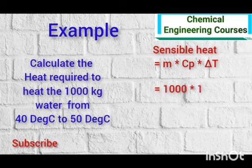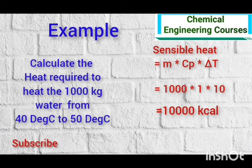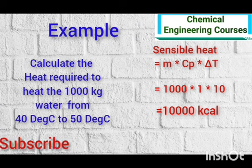Putting these values in our formula, we get the answer, which is 10,000 kilocalories. So to raise 1000 kg water temperature from 40 degree Celsius to 50 degree Celsius, we need 10,000 kilocalories of heat.